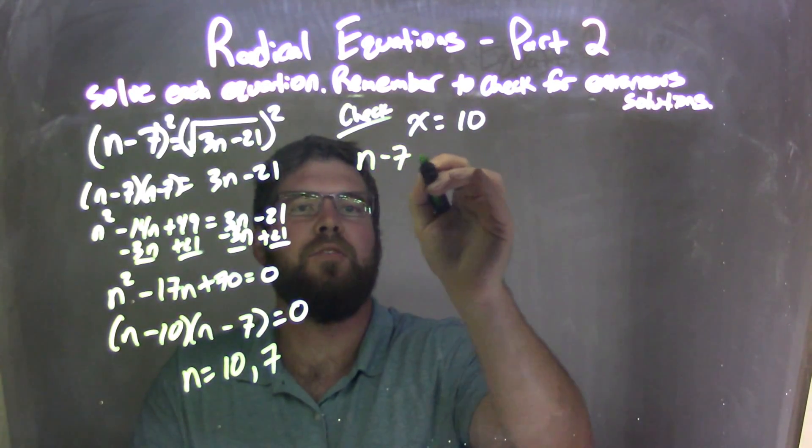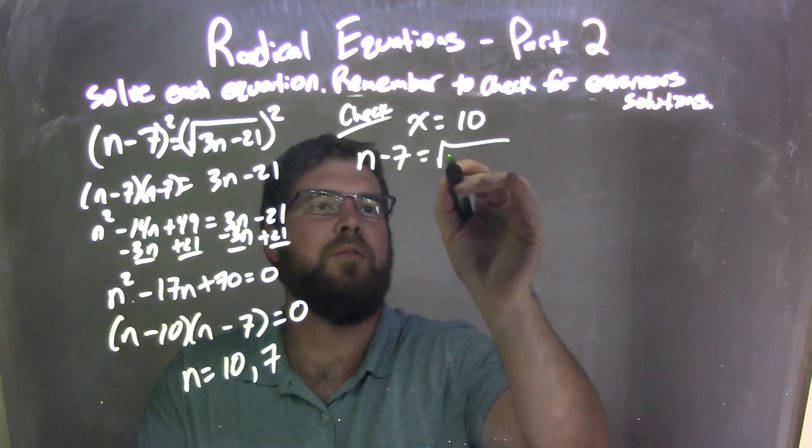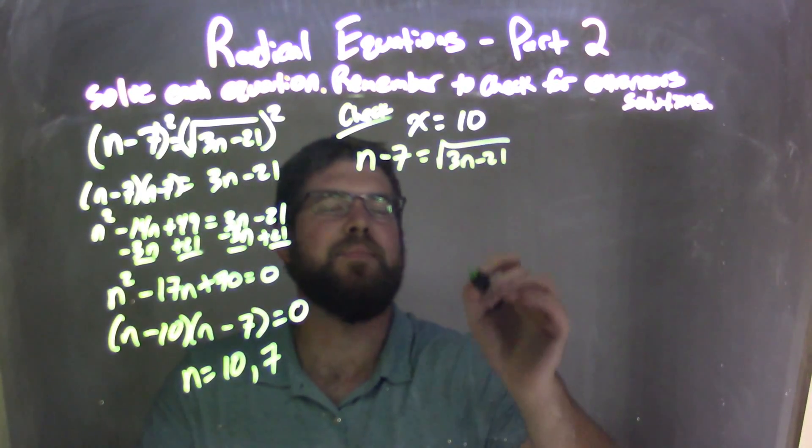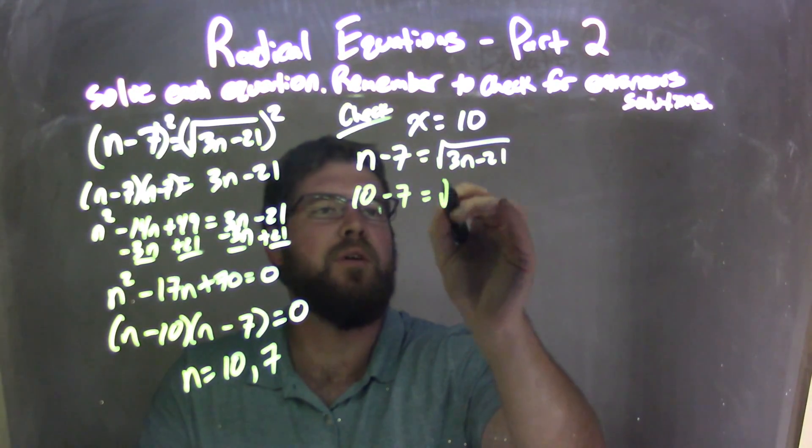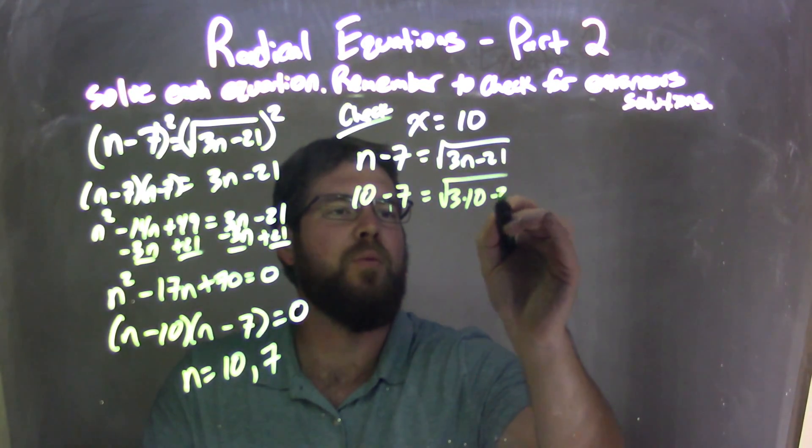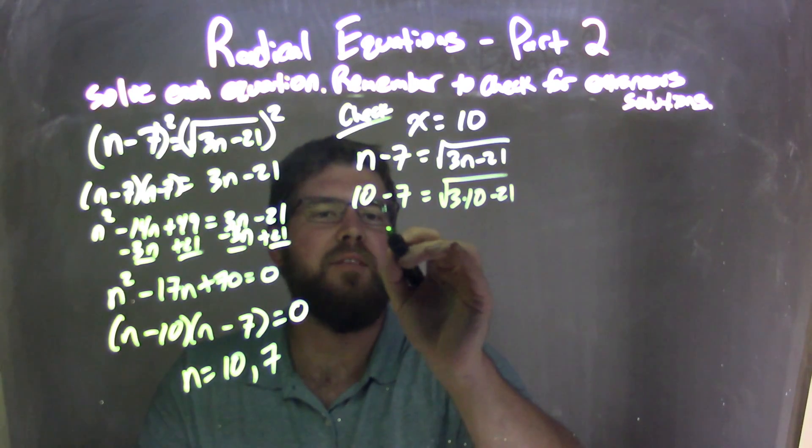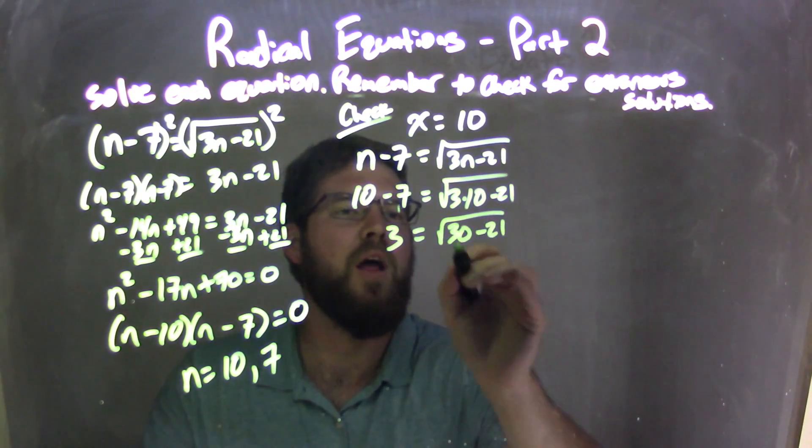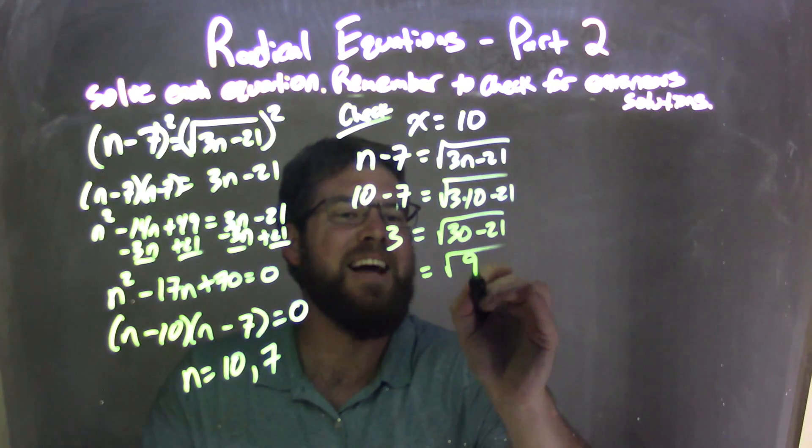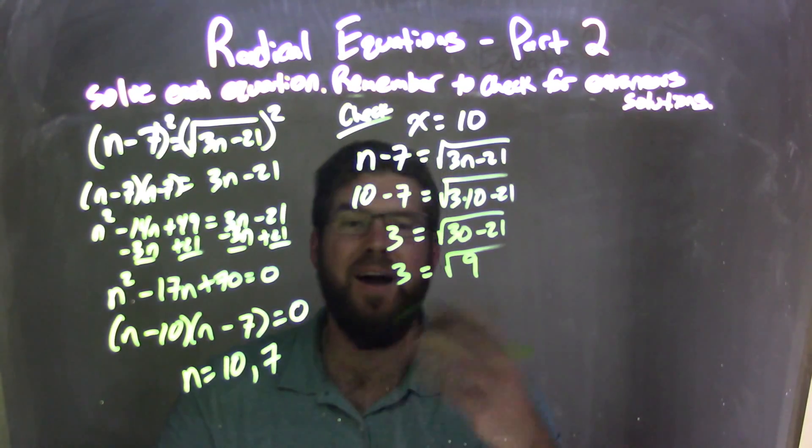So rewrite my first equation, n minus 7 equals square root of 3n minus 21. Let's plug 10 here for n, so 10 minus 7 equals 3 times 10 minus 21. Well, 10 minus 7 is 3. 3 times 10 is 30, minus 21. 30 minus 21 is 9. Bring down that 3.